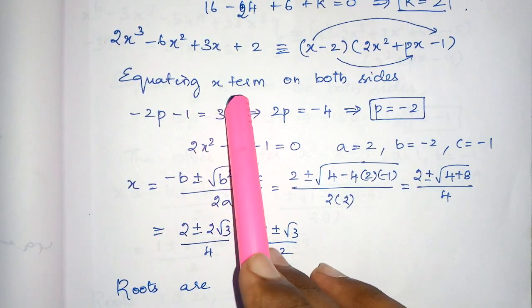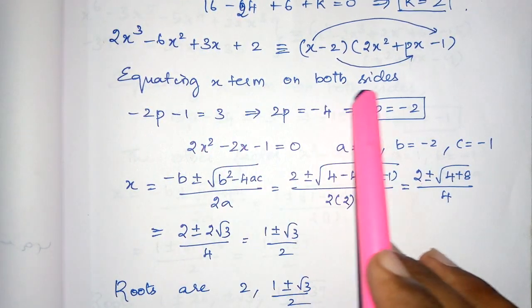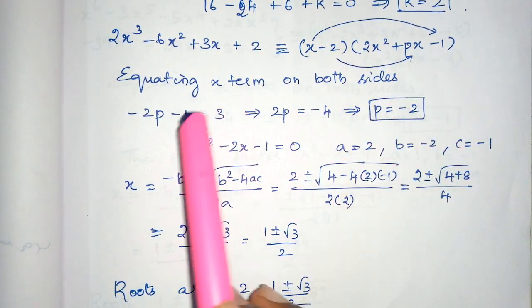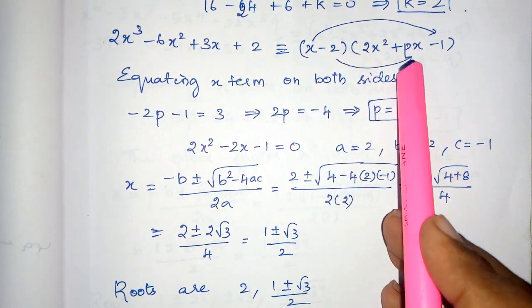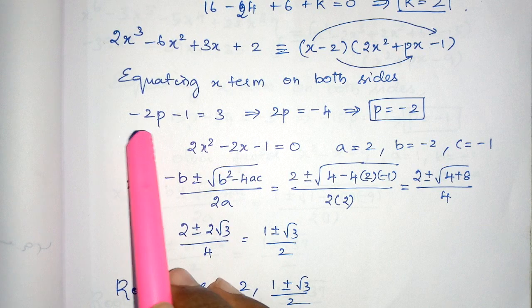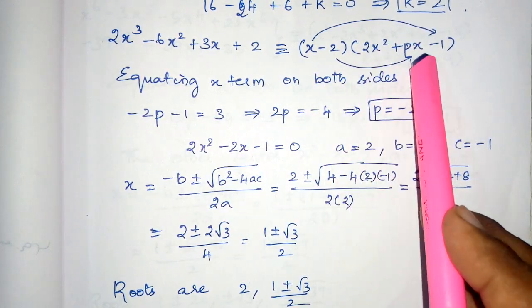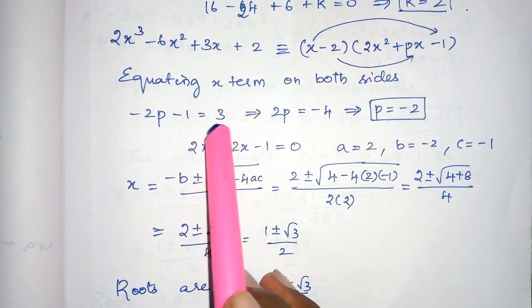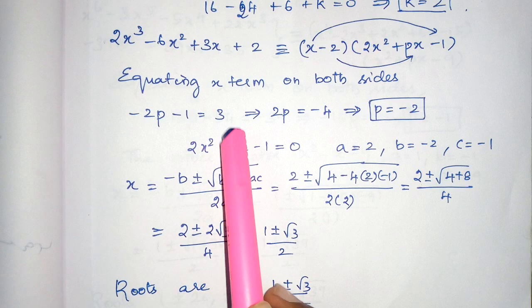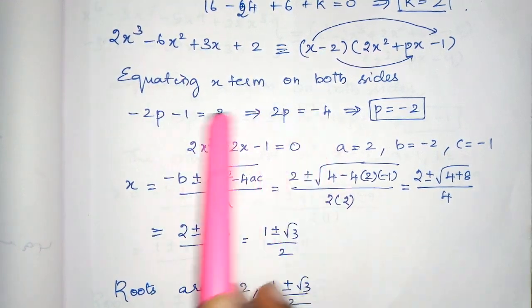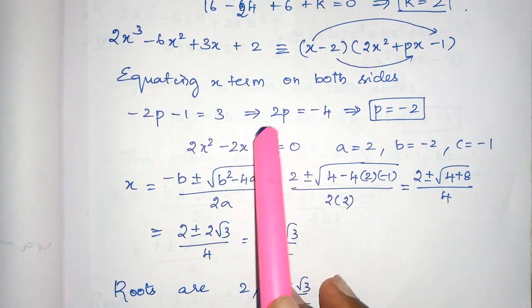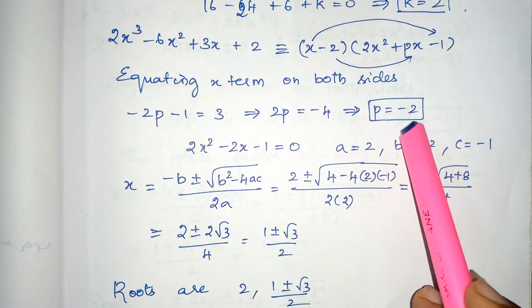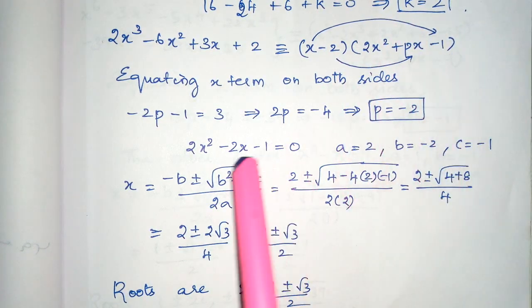Now, we have to equate the x term on both sides. So, equating x term on both sides. And how to equate, I have given here. x into minus 1 is minus x. So, I have taken minus 1. Minus 2 into px is minus 2px. So, I have taken minus 2p. And coefficient of x term here is 3. So, that is equal to 3. Now, bring this 3 to this side. So, it becomes minus 4 and minus 2 p to the other side. So, minus 2 p is equal to minus 4. p is equal to minus 2.